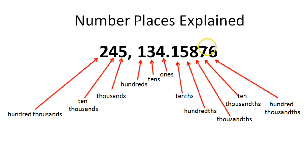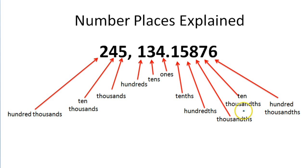The 7 would be occupying the ten-thousandths place. And the 6 here is occupying the hundred-thousandths place. So let's take a look at a few examples where I ask you to round to the tenths place, the hundredths place, or the thousandths place.